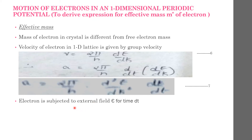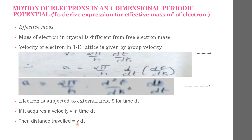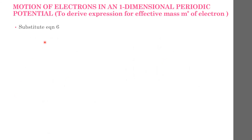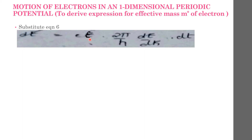The electron is subjected to an external electric field ε for time dt. If it acquires velocity v in time dt, then the distance travelled is v·dt, and it gains energy dE = eε·v·dt. Substituting equation 3 for the velocity, we get dE = e·ε·(2π/h)(dE/dK)·dt. Here we denote the electric field strength by ε so as not to confuse it with energy E.